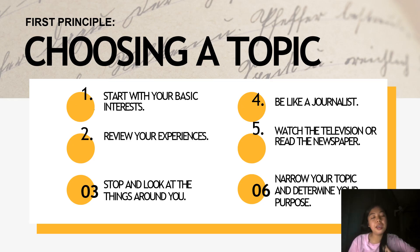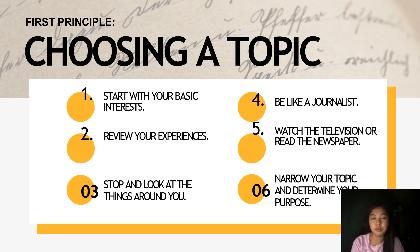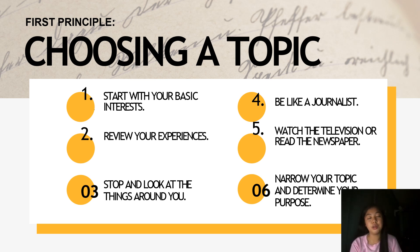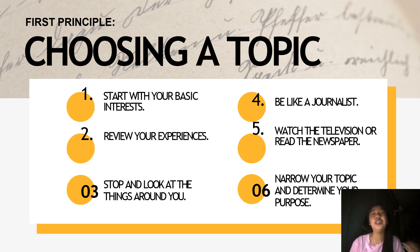The first principle is choosing a topic. Bear in mind these reminders when you choose a topic. You have to start with your basic interest, review your experiences, and stop and look at the things around you — that may help you as a writer and speaker. Be like a journalist when you write. Watch television or read the newspaper. Narrow your topic and determine your purpose. Make sure that you are knowledgeable and passionate about the topic itself. Your enthusiasm for the subject will be evident in your delivery and will help you build rapport with your audience.